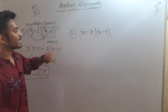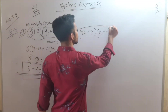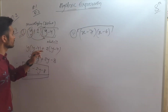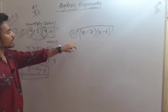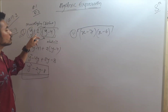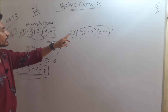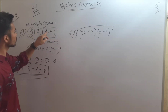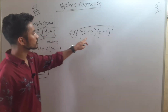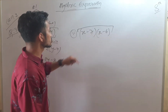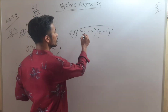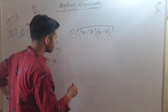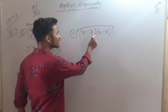The second section is of a similar type to the first section. The values are different — in place of y we have x, and we have different constants. So similarly here we have to multiply both the brackets. We will open the bracket.